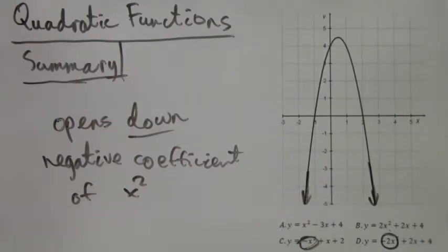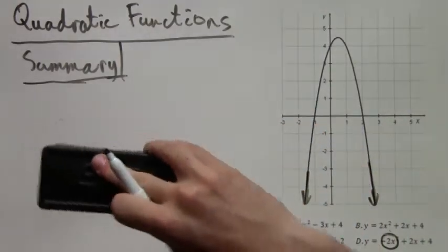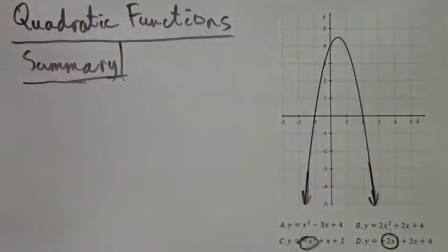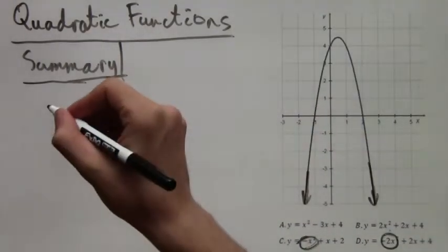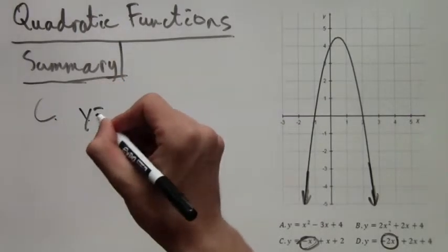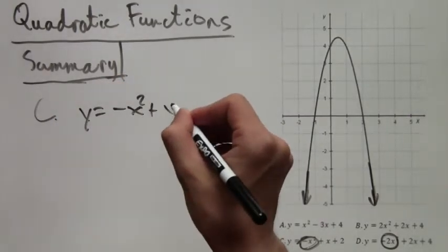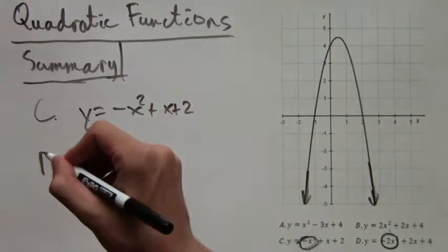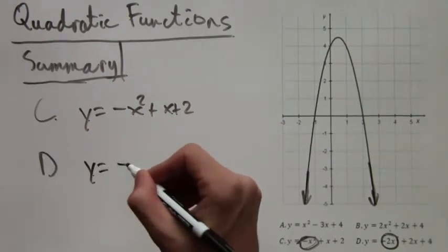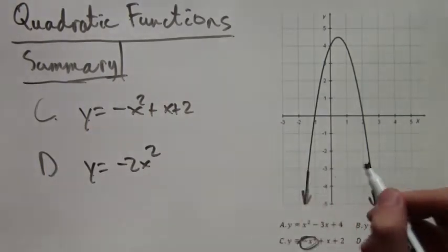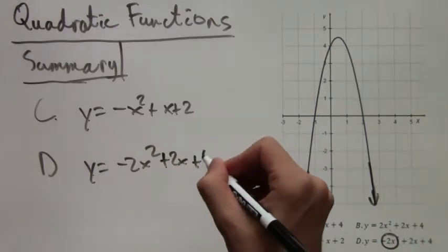So now that we're down to two choices we just have to eliminate one of them and then we'll have the answer. So here I'm rewriting larger the two options left. Y equals negative x squared plus x plus 2. Y equals negative 2x squared plus 2x plus 4.